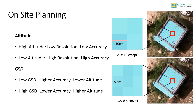GSD is the distance between the centers of two successive pixels on your map, measured in inches, centimeters or millimeters. A drone can measure with a GSD of 5 cm per pixel, meaning each pixel on your digital map represents 5 cm of actual space in the real world. An image with a GSD of 10 cm per pixel produces a lower resolution picture, while an image with a GSD of 5 cm per pixel has better resolution.